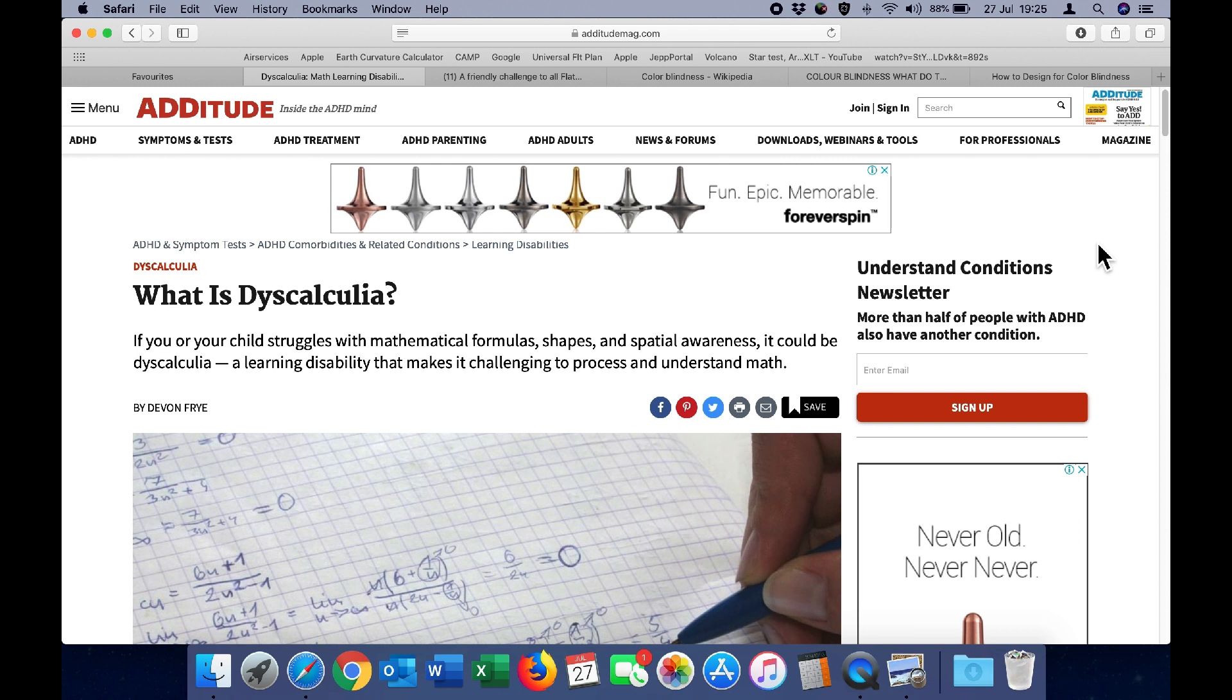If you or your child struggles with mathematical formulas, shapes and spatial awareness it could be dyscalculia, a learning disability that makes it challenging to process and understand math. Now this affects about five percent of the population. And apparently many people who have it are undiagnosed and not aware of it.